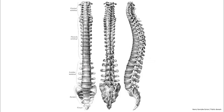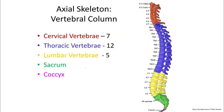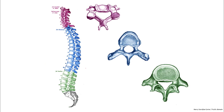Now we'll move on to the vertebral column. The vertebral column has some unique characteristics as well as interesting curvatures. It can be broken into a cervical region with seven cervical vertebrae, a thoracic region with 12 thoracic vertebrae, a lumbar region with five lumbar vertebrae, a sacrum — which has fused vertebrae and is really just one bone in the adult — and the coccyx, which also has some fused vertebrae. You should be able to tell the differences between each of these regions.